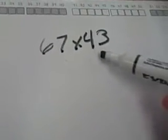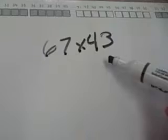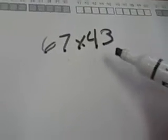Another way to multiply two two-digit numbers, such as 67 times 43, is to use the shortcut method.